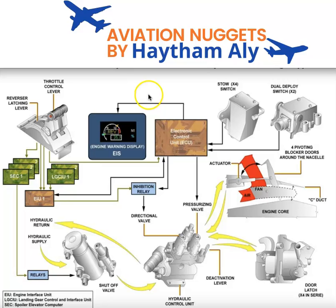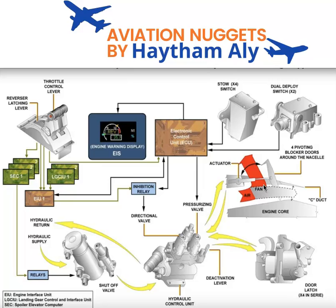As you can see here, the thrust reverser system of the CFM56-5B engine is of the aerodynamic blockage type. We have four pivoting blocker doors that stop and redirect fan discharge airflow into the forward motion. Two blocker doors are located on each C-duct, so we have two C-ducts and four pivoting blocker doors total.